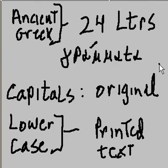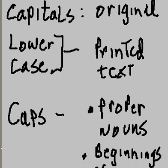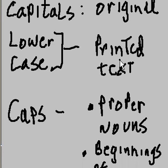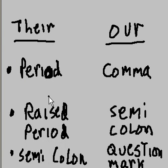So, in review: Ancient Greek has 24 letters, called grammata. Capitals were the original characters, then they developed lowercase characters, which were used for printed text. Capitals were used for proper nouns and at the beginnings of paragraphs. Their period equals our comma, their raised period equals our semicolon, and their semicolon equals our question mark.